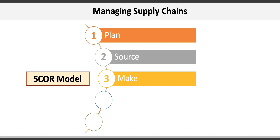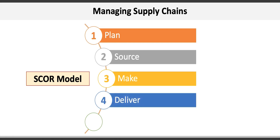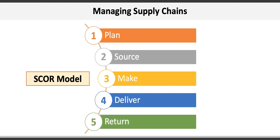Delivering includes managing orders, transportation, and distribution to provide goods and services. This entails all order management activities from processing customer orders to routing shipments, managing goods at distribution centers, and invoicing the customer. Returning includes processing customer returns — including maintenance, repair, and overhaul — and dealing with excess goods. This could include return authorization, receiving, verification, disposition, and replacement or credit if necessary.